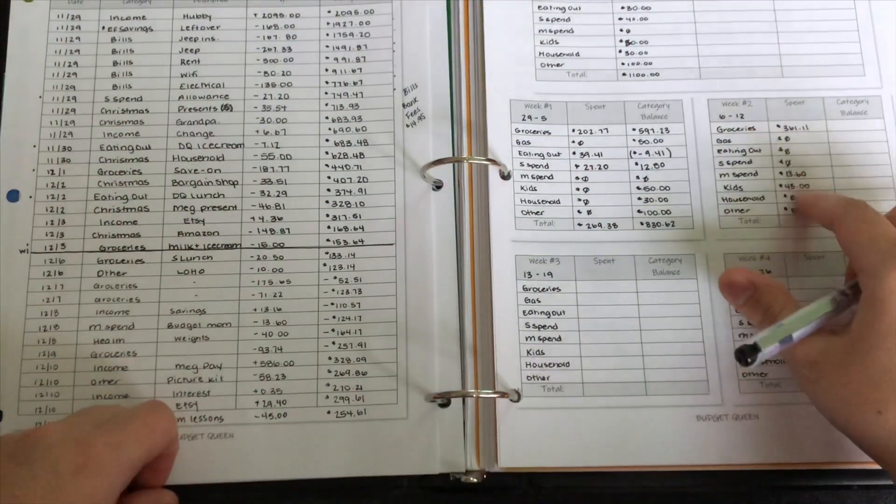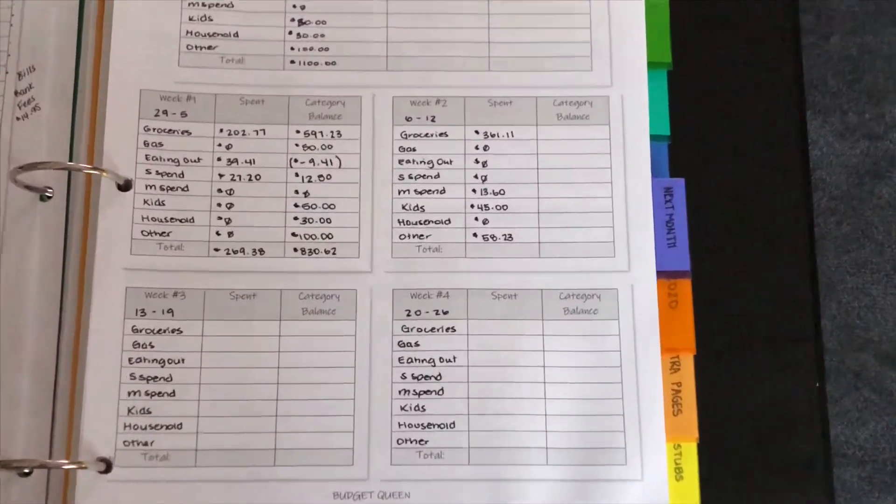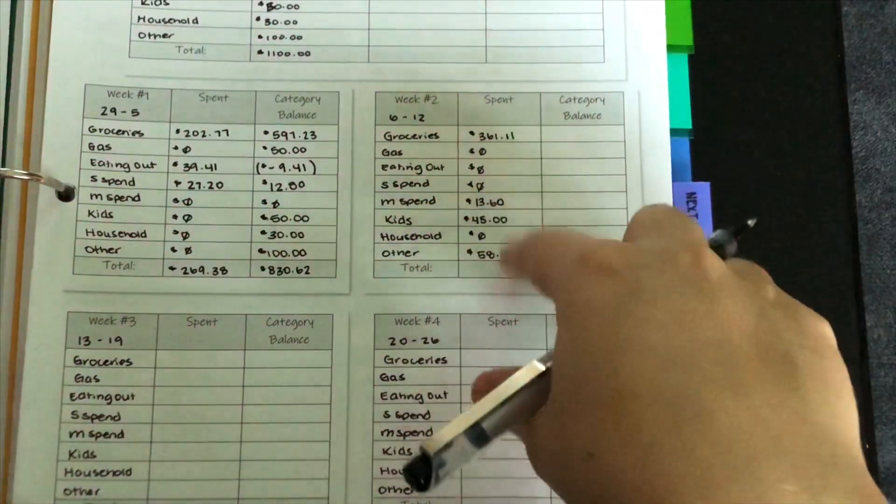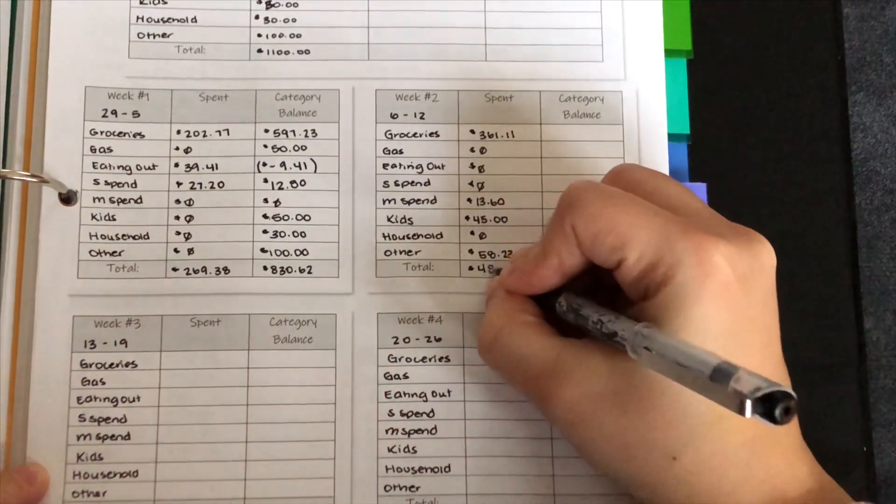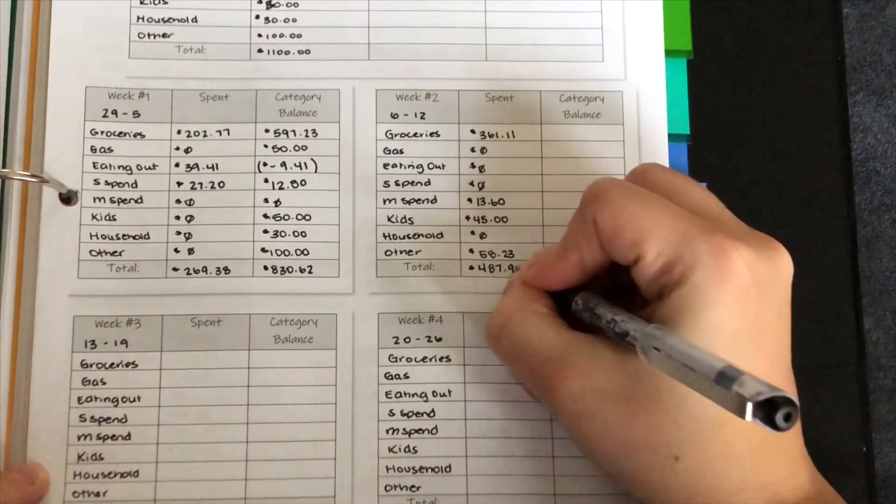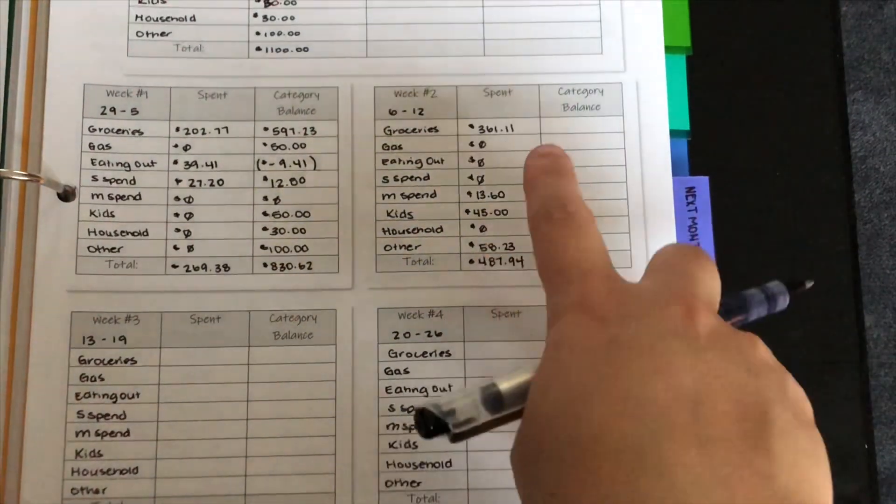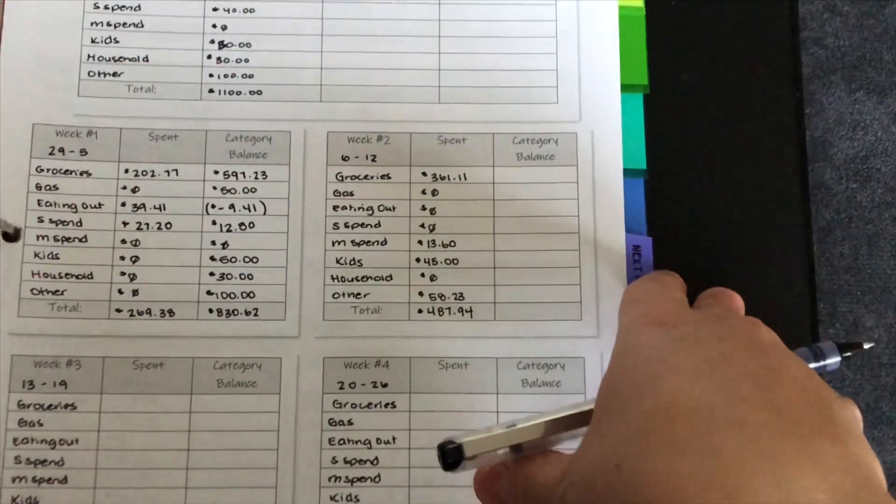So now we're going to zoom in here and now I'm going to total this section. It is $487 and 94 cents. So pretty expensive. A lot of that was the groceries of course, but yeah, that's expensive.